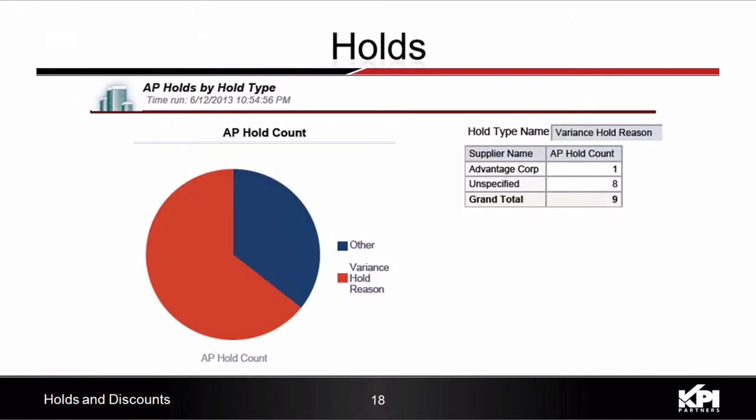Payables invoices can be on hold for multiple reasons, and getting more details on these holds will help business users manage their supplier invoices more efficiently. The new holds functionality gives clear visibility into holds by hold type or by suppliers. Customers can also analyze the average days on hold and the hold amount. Version 11.11.71 not only captures hold information, but also tracks the hold release data, which can be analyzed by release reason, release date, or even released by user.